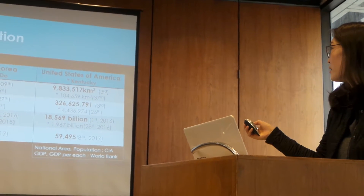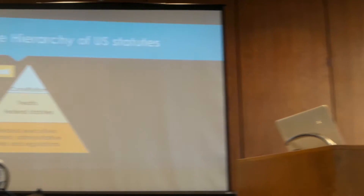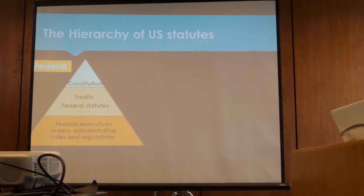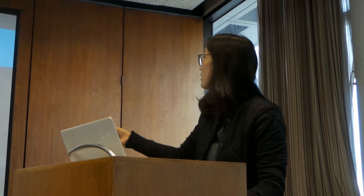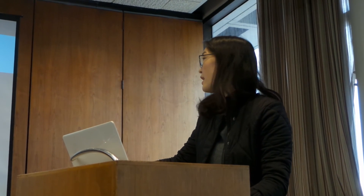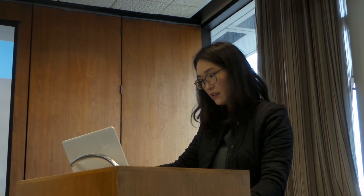Next is the hierarchy of the United States — the slides include Korean labels as well. The Constitution of the United States is the sovereign law, and treaties and federal statutes have the same effect. Federal executive orders are issued by the president, and administrative rules and regulations are issued by federal administrative agencies, like ministries.